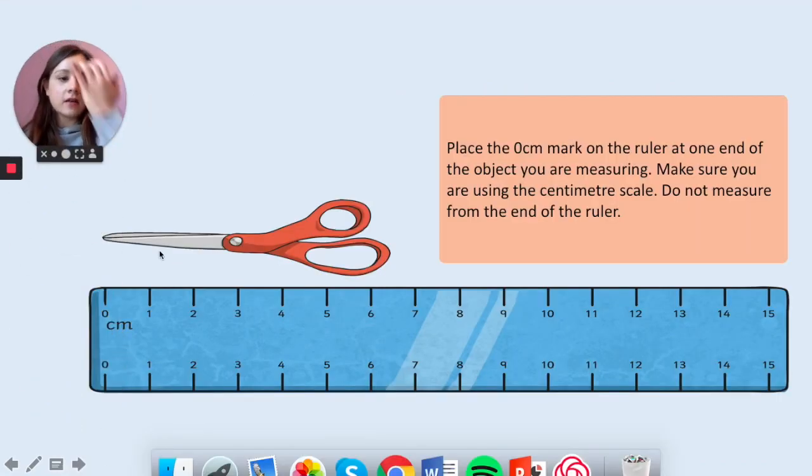This is how we are going to learn how to use a ruler. You find your object, you place it on zero centimeters. Make sure that you do not go to the end of the ruler because that's not accurate. That's not where the ruler starts measuring from. We need to make sure that we are on zero. Make sure also that you have it on the centimeter side.